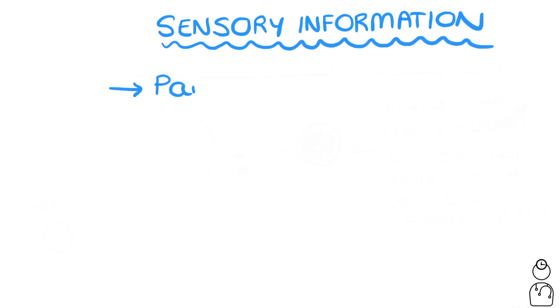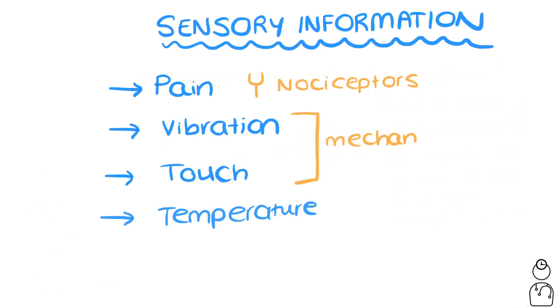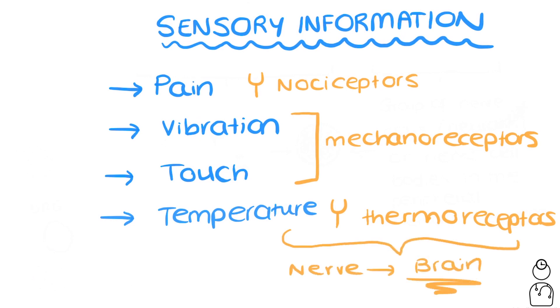There are lots of types of sensory information, but the ones we're going to focus on include pain, vibration, touch, and temperature. These are picked up by the body through receptors, such as nociceptors for pain, mechanoreceptors for vibration and touch, and thermoreceptors for temperature. These sensory receptors give rise to nerves, and these nerves travel to the brain to let your brain know what's going on around it.